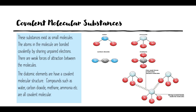To summarize: covalent molecular substances exist as small molecules. The atoms that make up the molecules are covalently bonded together, and the molecules themselves are held together by weak forces of attraction. That is your covalent molecular substances.